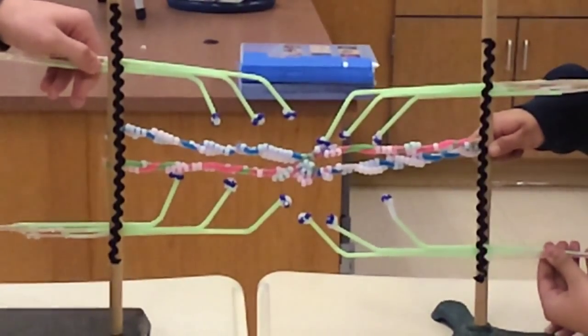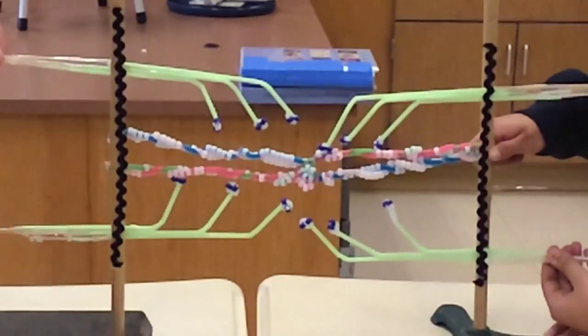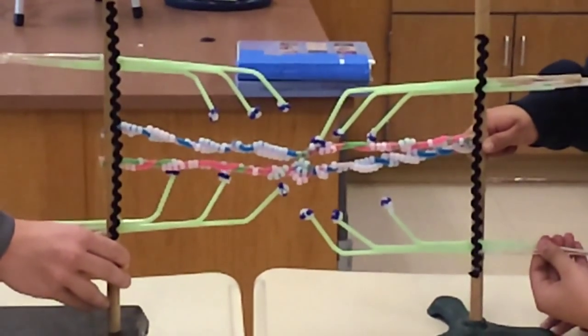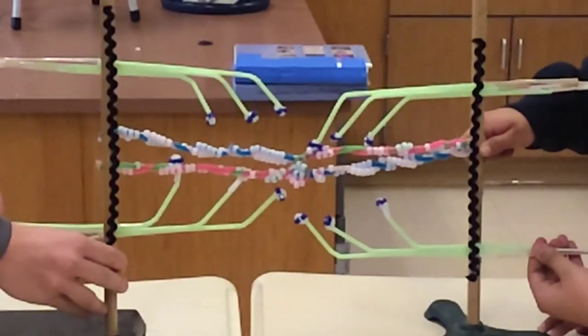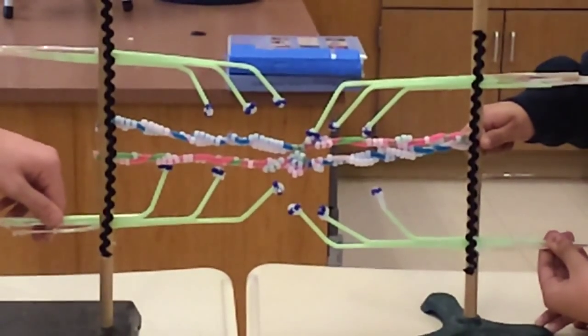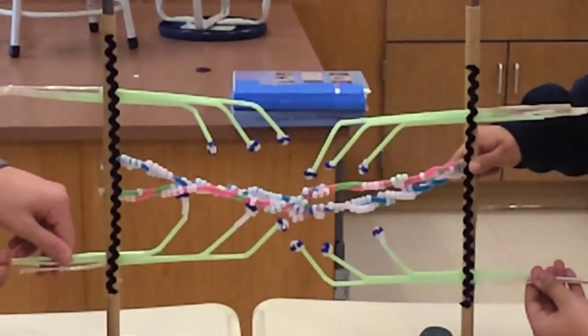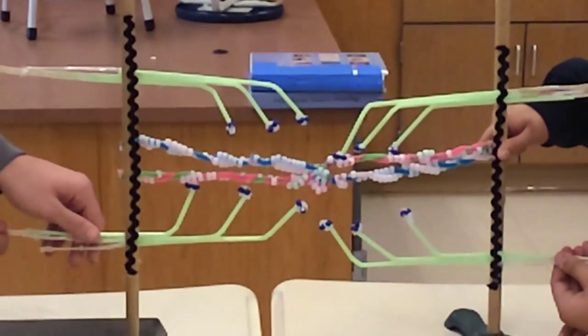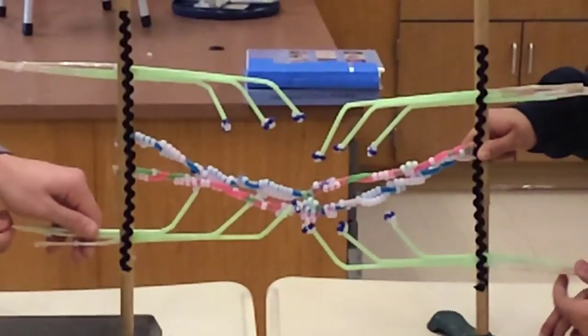Tropomyosin molecules then move and open up specific sites on the actin filaments. The actin and myosin then form linkages with each other. The actin filaments are pulled inward by the myosin cross bridges. As the actin is pulled inward, the muscle fiber shortens and the muscle becomes contracted.